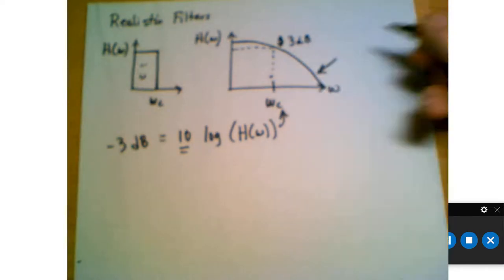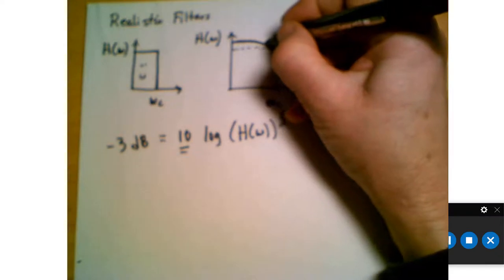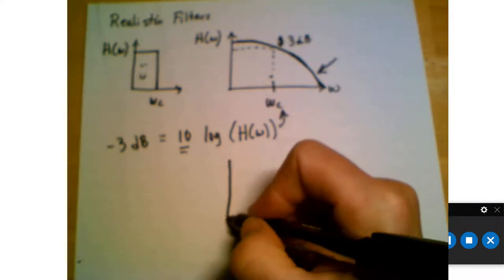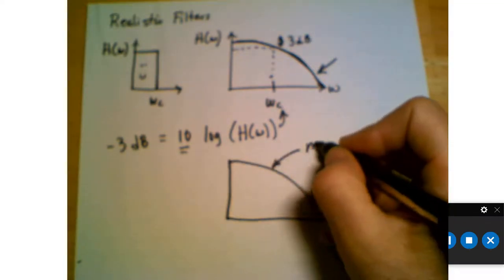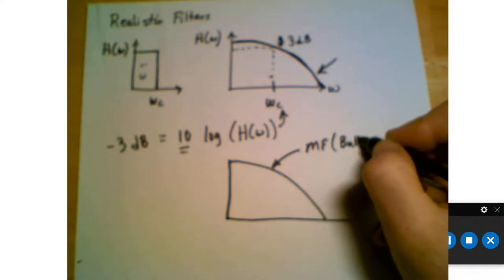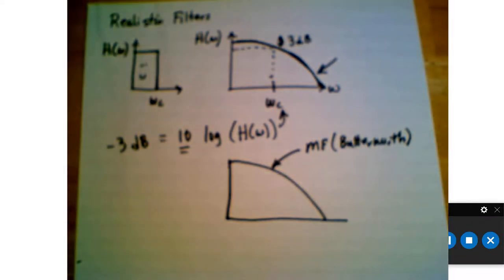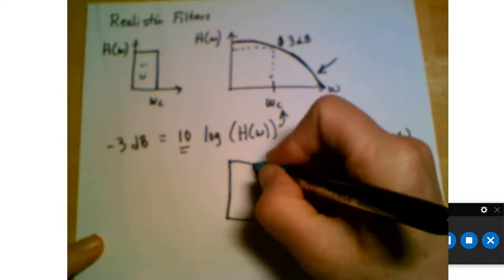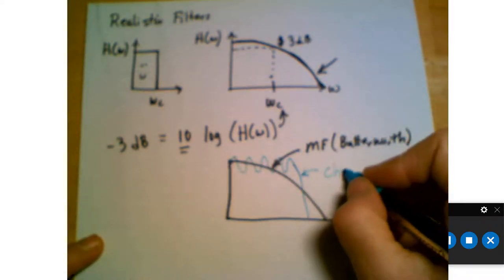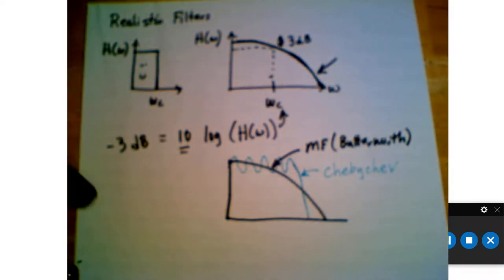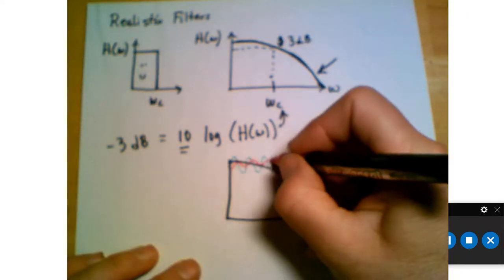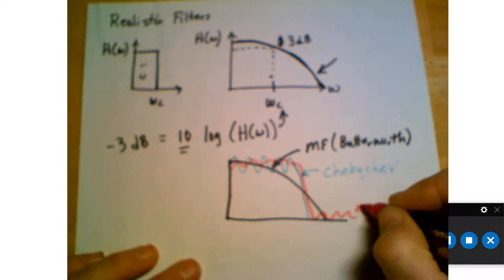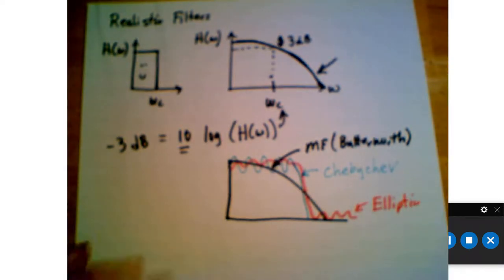This type of filter is called maximally flat, meaning there are no ripples — it's the flattest type of filter we can make. This is also known as a Butterworth filter. We have other types too. For example, a Chebyshev filter comes down steeper, but in order to achieve that, it has some ripple in the passband. Or we might want an elliptic filter, which has smaller ripples in the passband and also smaller ripples in the stopband. Each of these filter types is useful and designed in slightly different ways.